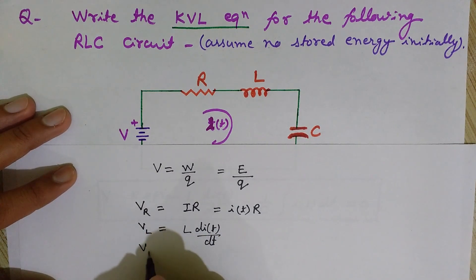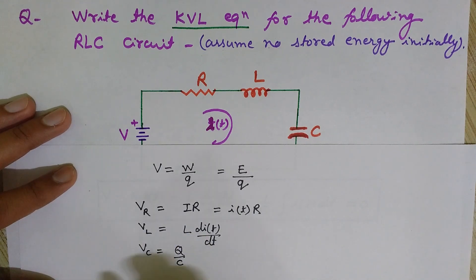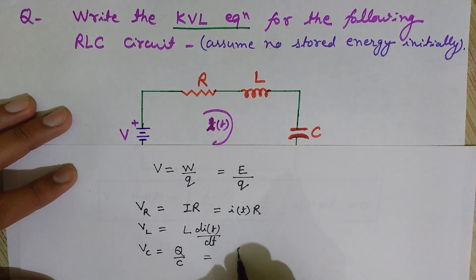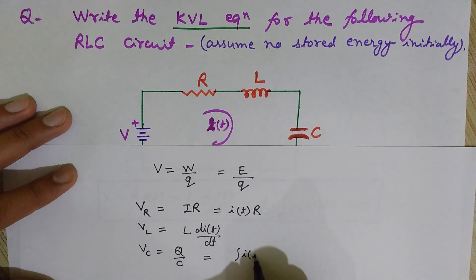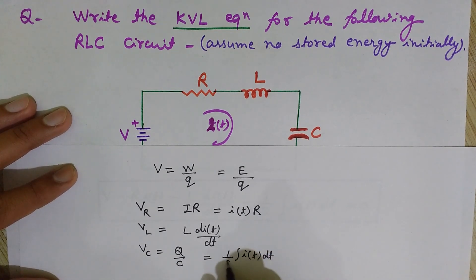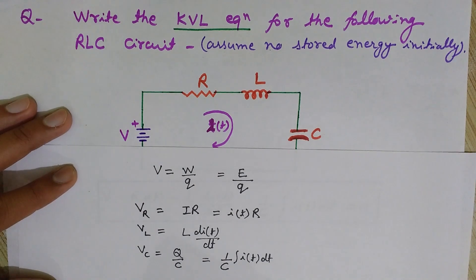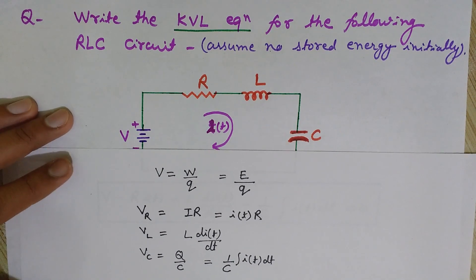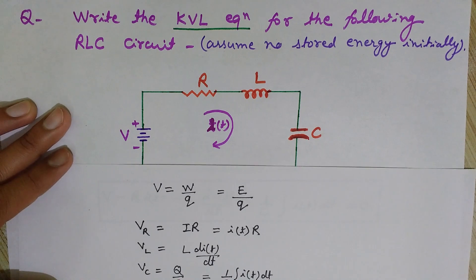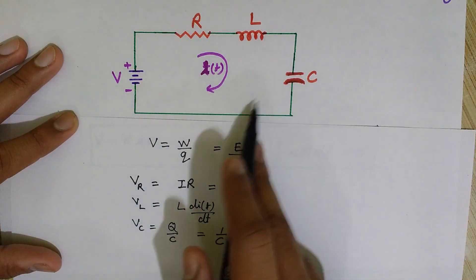Now, what is the voltage across the capacitor? We know voltage V equals Q divided by C, so Q equals CV for a capacitor. And Q equals the integral of I(t) dt. Therefore the voltage across the capacitor is (1/C) times the integral of I(t) dt. Now we know all these values and can apply KVL in this RLC circuit.